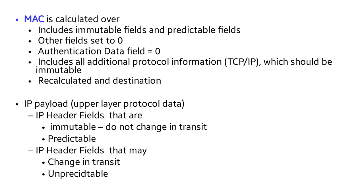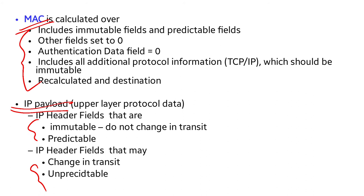MAC is calculated using immutable fields and predictable fields; other fields are set to zero, and the authentication data field is also set to zero. It includes all additional protocol information that should be immutable. Immutable fields do not change in transit; mutable but predictable fields may include destination address; and mutable fields zeroed for calculation include time-to-live and header checksum.